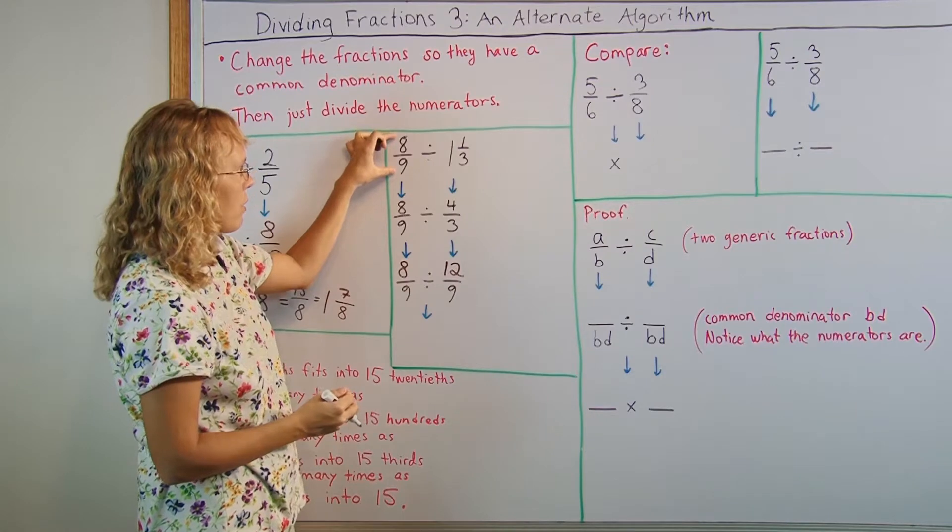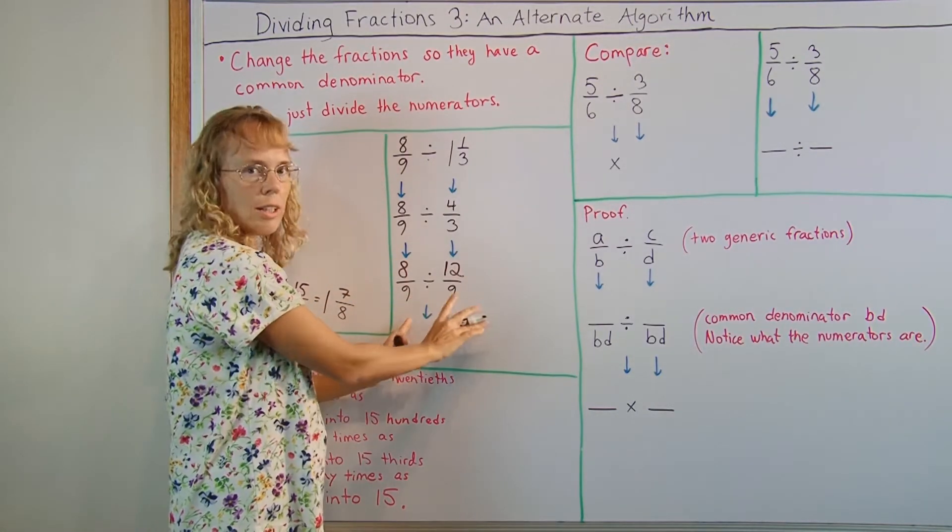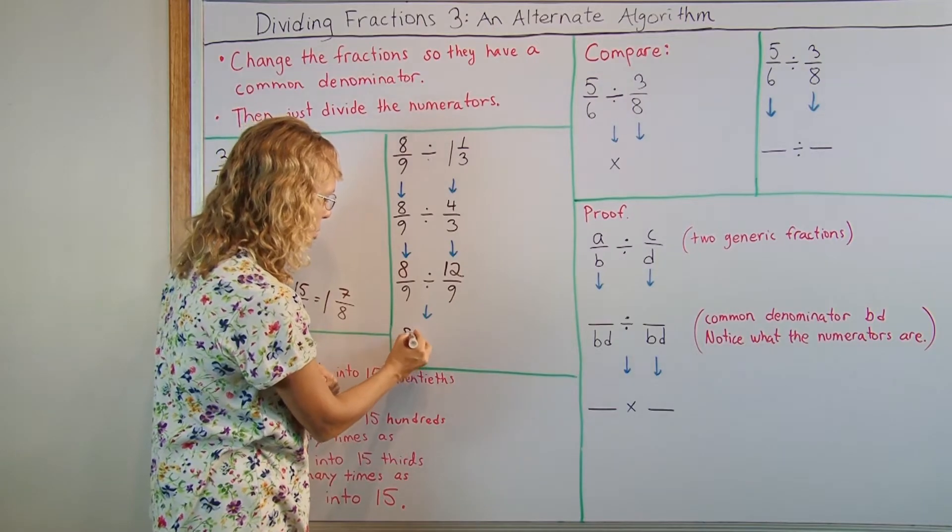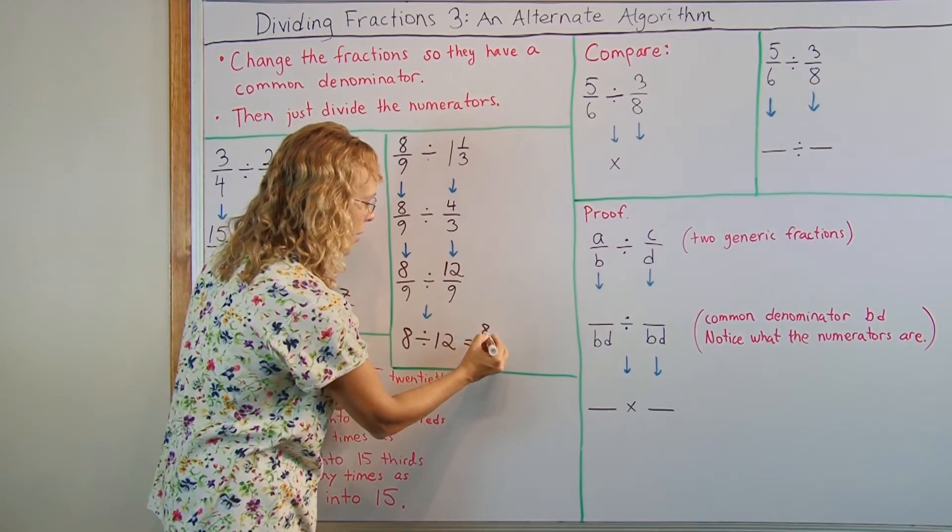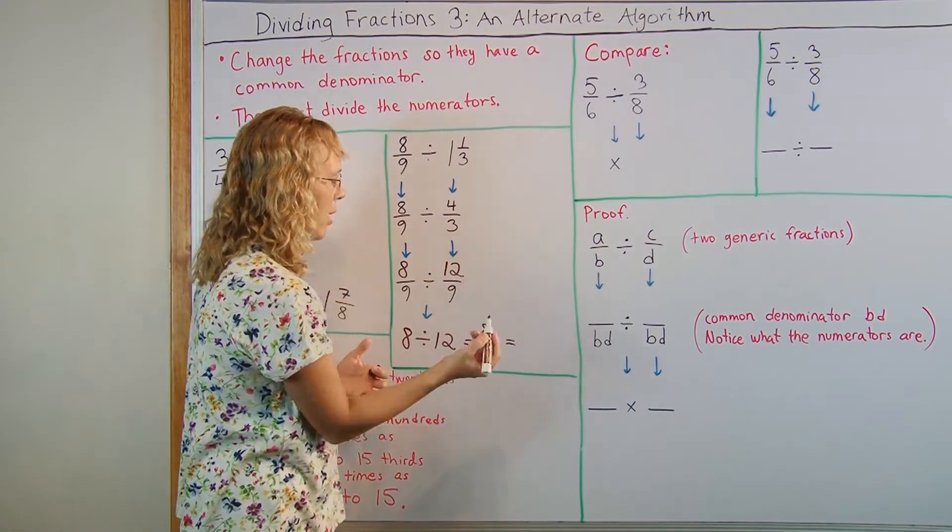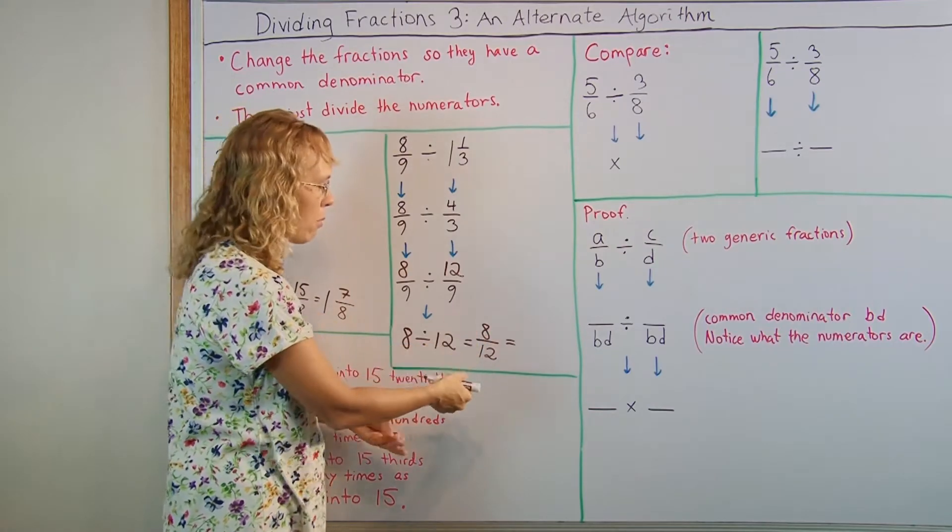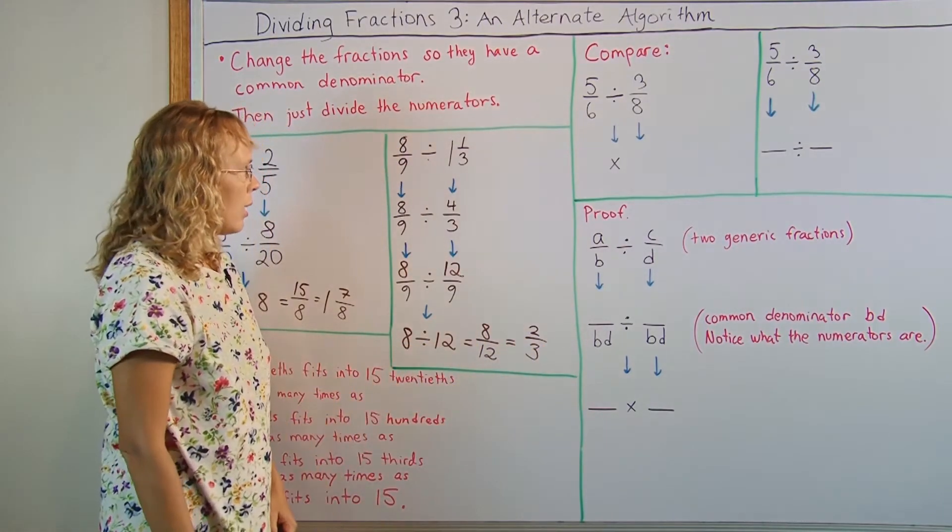So my original division problem is now here. And now I just drop the 9s and I just write the whole numbers from the top. 8 divided by 12 is my answer, which is 8 over 12. This one simplifies now because both are divisible by 4, so I get 2 thirds actually.